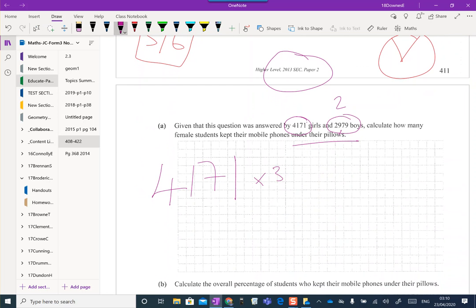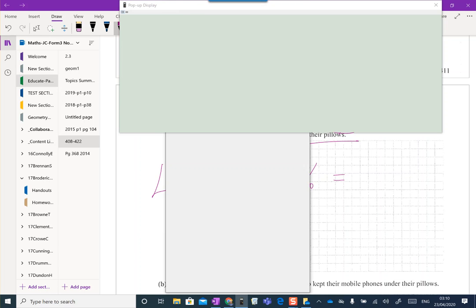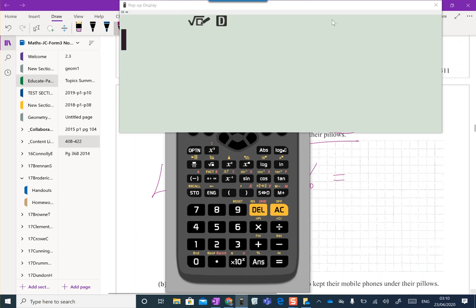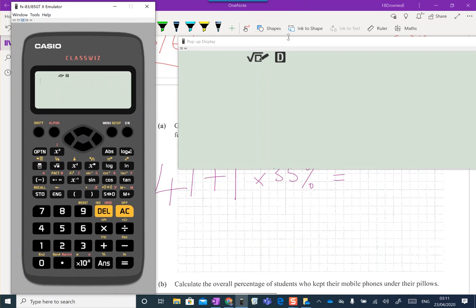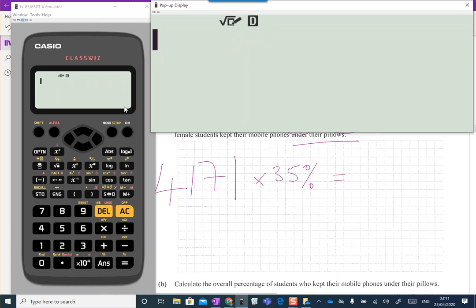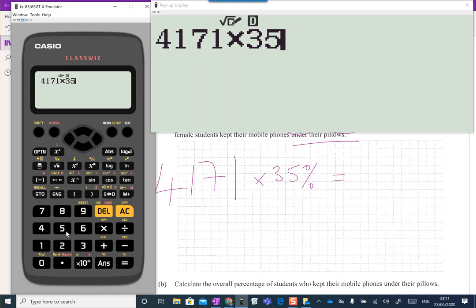I'm leaving the calculator up here because I want to show you again how to get the percentage. You can multiply by the number 35%. It's the same as 0.35, and you can multiply by 0.35.